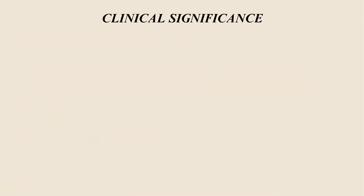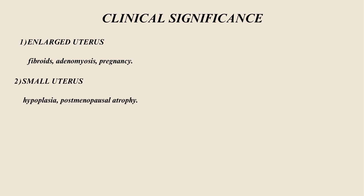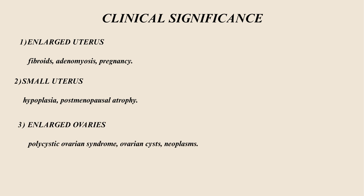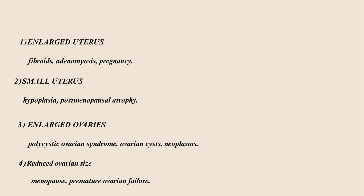In summary, an enlarged uterus indicates fibroids, adenomyosis, or pregnancy. A small uterus indicates hypoplasia or postmenopausal atrophy. Enlarged ovaries indicate polycystic ovarian syndrome, ovarian cysts, or neoplasms. Reduced ovarian size indicates menopause or premature ovarian failure.